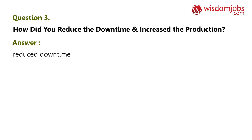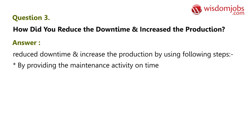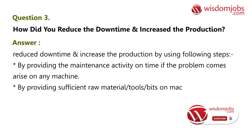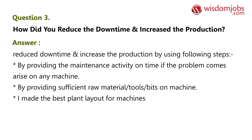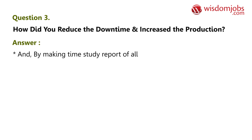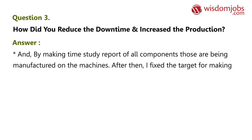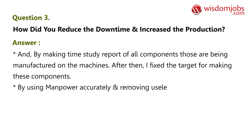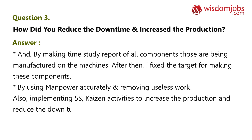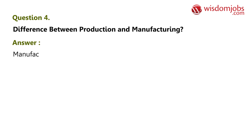Question 3: How did you reduce the downtime and increase the production? We reduce downtime and increase production by providing maintenance activity on time when a problem arises on any machine, by providing sufficient raw material and tools on the machine, by making the best plant layout for machines and arranging them in line according to the next process, and by making a time study report of all components being manufactured. We fix targets for making these components, use manpower accurately, remove useless work, and implement 5S and Kaizen activities.